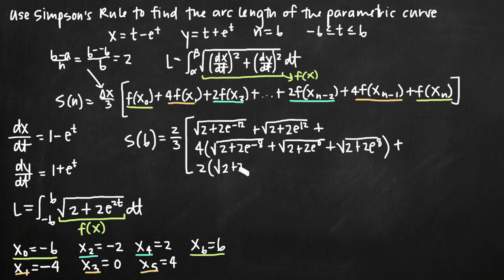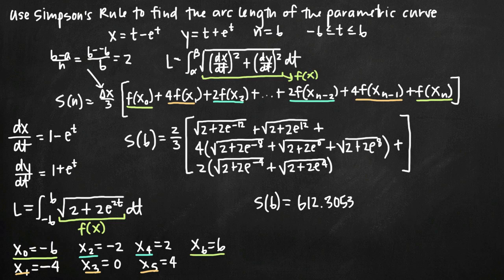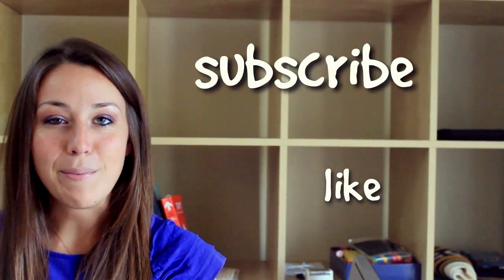Plugging in negative 2 gives the square root of 2 plus 2e to the negative 4, and plugging in positive 2 gives the square root of 2 plus 2e to the positive 4. Those are multiplied by 2. That completes our entire Simpson's rule formula. Plugging all of this into a calculator gives an approximation for arc length of the parametric curve of approximately 612.3053. I hope you found that helpful — if so, like the video and subscribe to be notified of future videos.